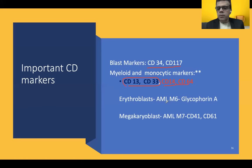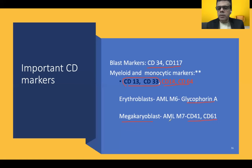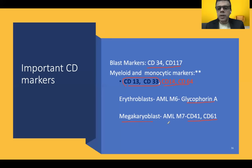Erythroblasts are positive for glycophorin A and CD71. In AML M7 (megakaryoblastic leukemia), CD41 and CD61 are positive. An important feature of AML M7 is bone marrow fibrosis: the preponderant megakaryoblasts release fibrogenic growth factors like PDGF, causing significant bone marrow fibrosis. This is a high-yield point that may appear in vignettes.